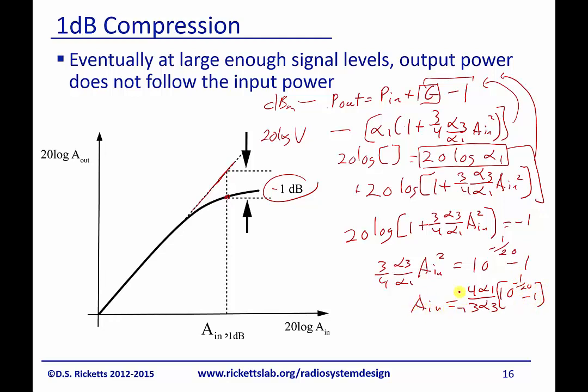And I take the square root of that and that is going to give me the voltage amplitude where my 1 dB compression point is. And you can see we can write it simply in terms of alpha_1 and alpha_3. So if you're given the Taylor expansion of the voltage, the voltage expression, you can calculate where the voltage would be and the power would be related to that voltage.